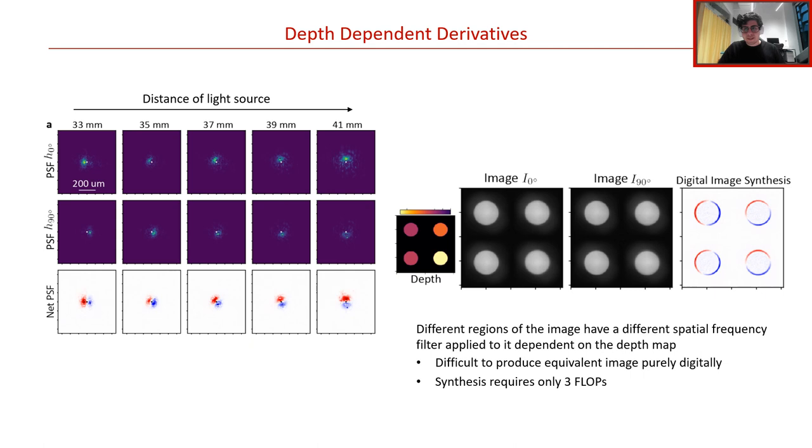On the right, we show in simulation the use of this camera for imaging a toy scene consisting of uniform intensity disks at different depths. By subtracting the two polarization encoded images, we then obtain the digitally synthesized image where each object has a different orientation for the applied derivative. By identifying this orientation, we can easily estimate the distance of objects. We highlight that producing an equivalent image using only digital processing of a standard camera image would be very difficult as it would require first computing a depth and then a segmentation mask. Alternatively, by optimizing our optics in this multi-image system, we obtain this result within a minimum of three floating-point operations.